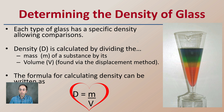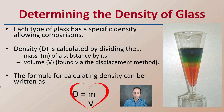When we determine the density, how do we go about this? Each type of glass has a specific density to allow for these comparisons to occur. Density, capital D, is calculated by dividing the mass by the volume. Think of it as M over V — the top of the heart kind of looks like an M and the bottom side looks like a V, so that's an easy way to remember it's mass over volume.